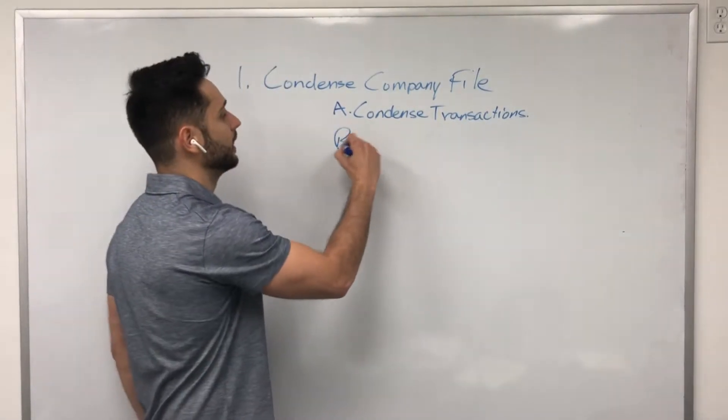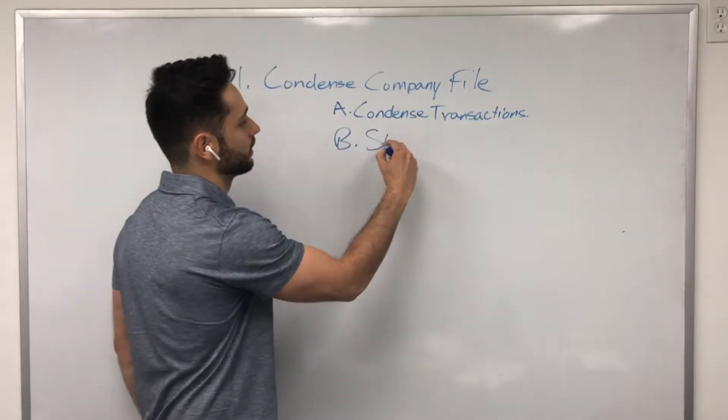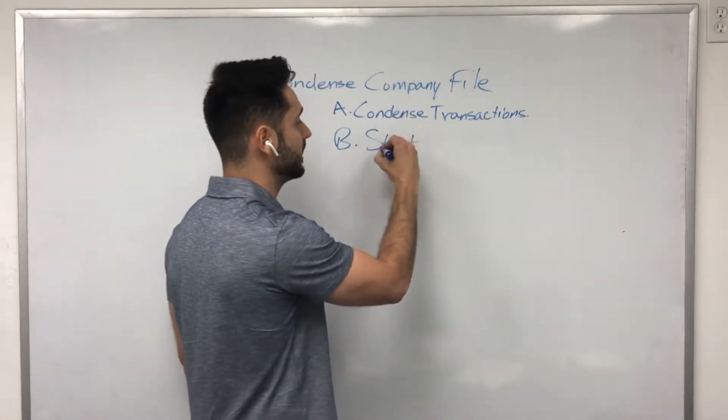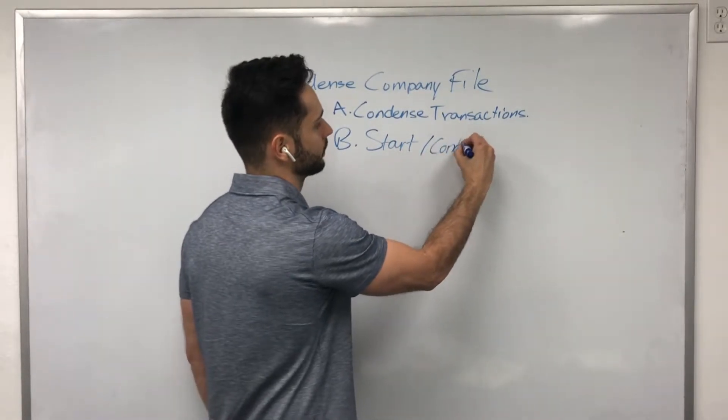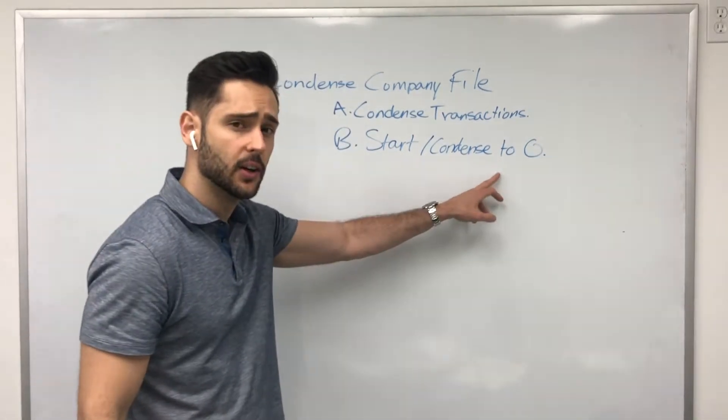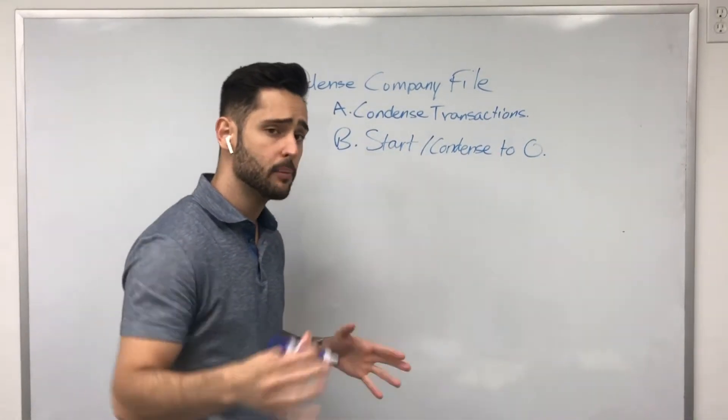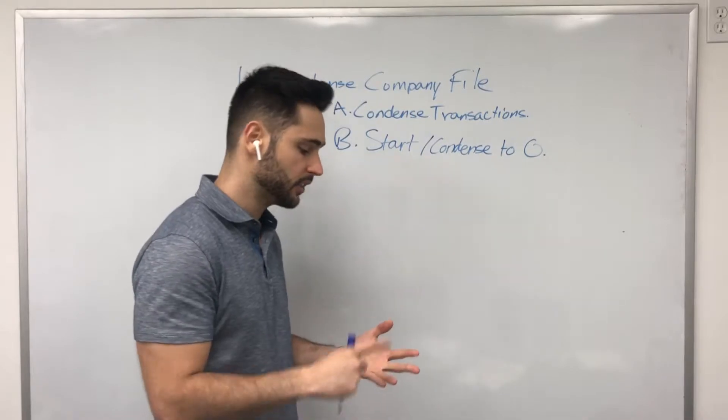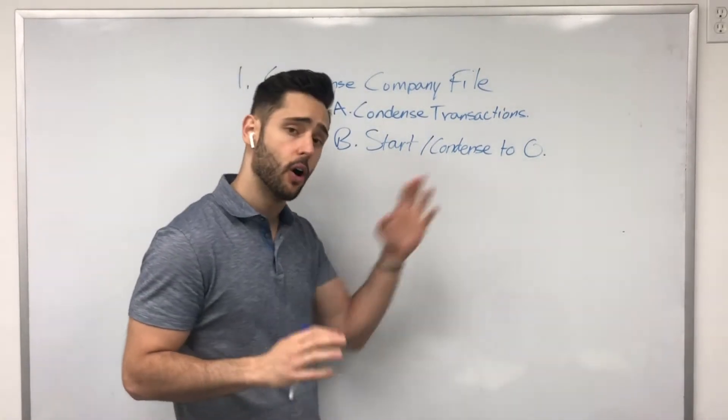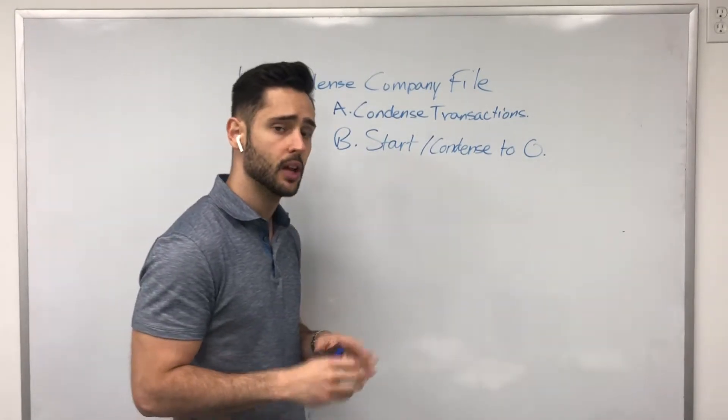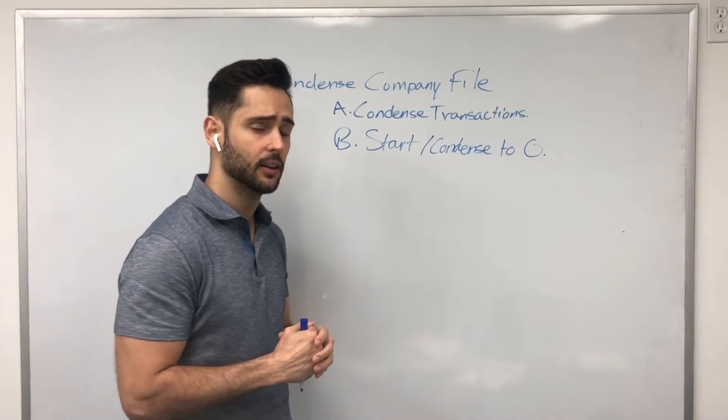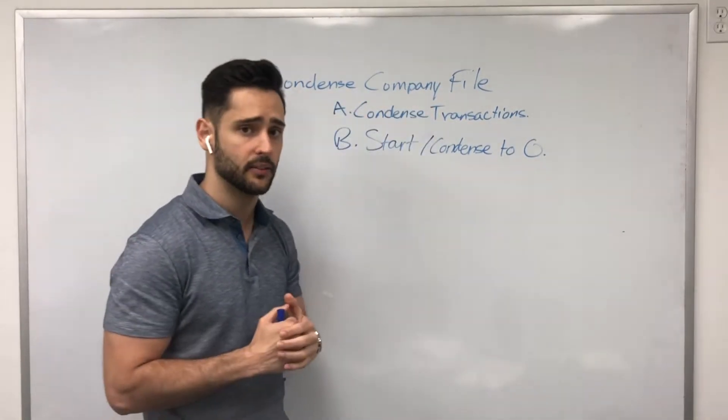B is you can literally start the company file with no transactions again. Basically you can condense to zero is what I like to call it. When you condense to zero, this means that you'll get a company file that'll contain all your items, all your customers, all your pricing, everything, but it'll remove all of the history. You will have no accounts receivable, no open balances on the customer, so you'll have to put those in by hand. So these are the two things that you can do when condensing a company file.